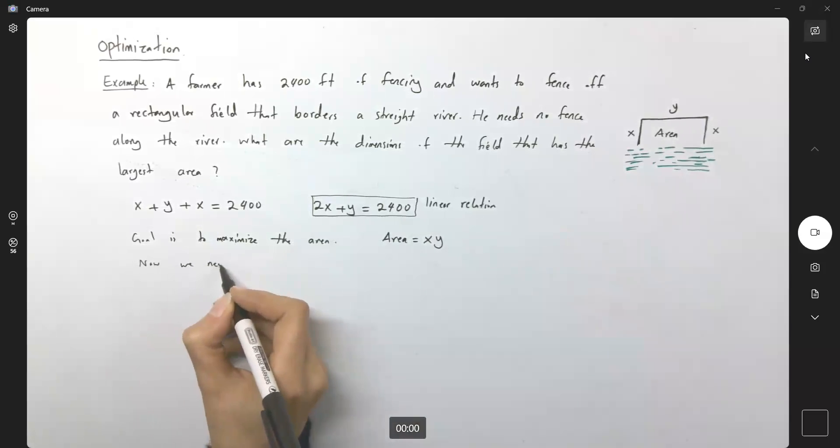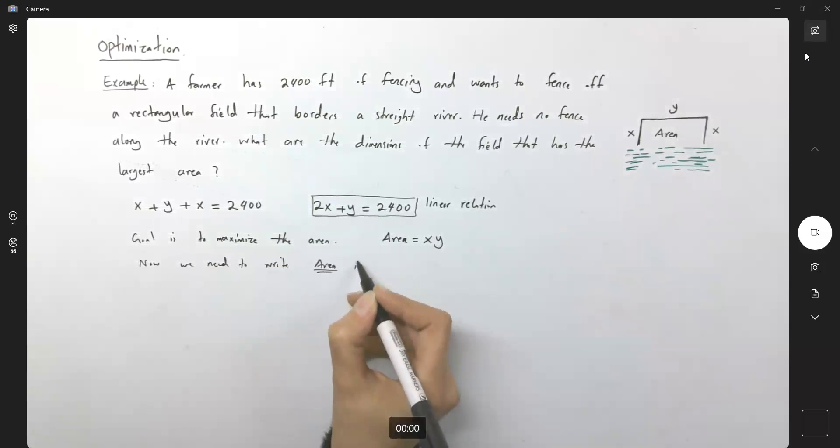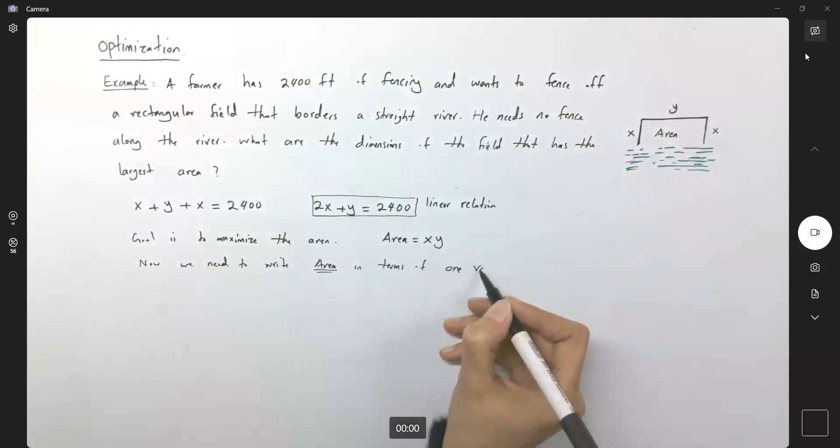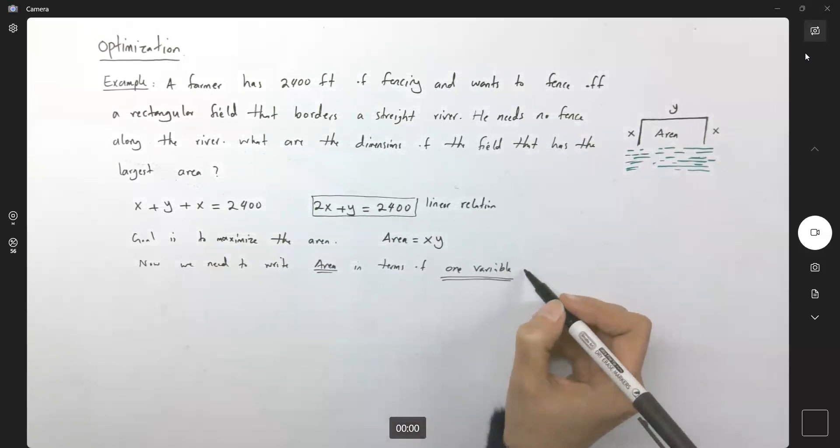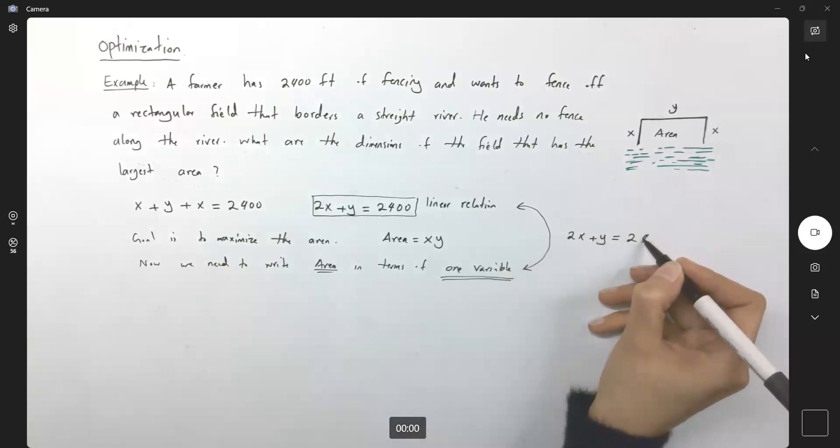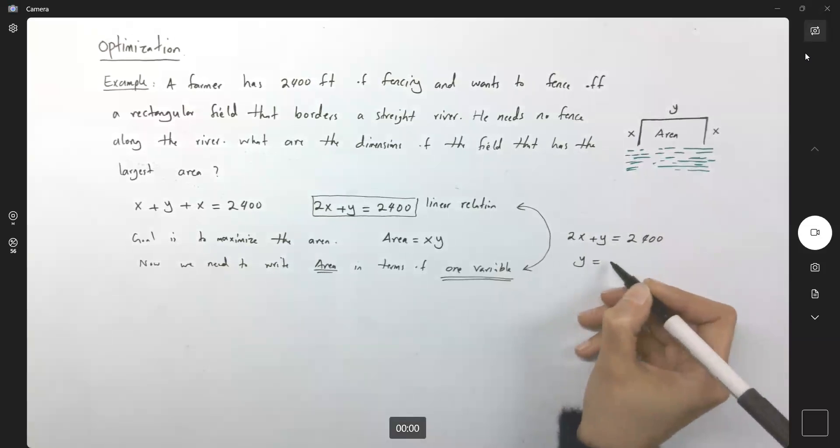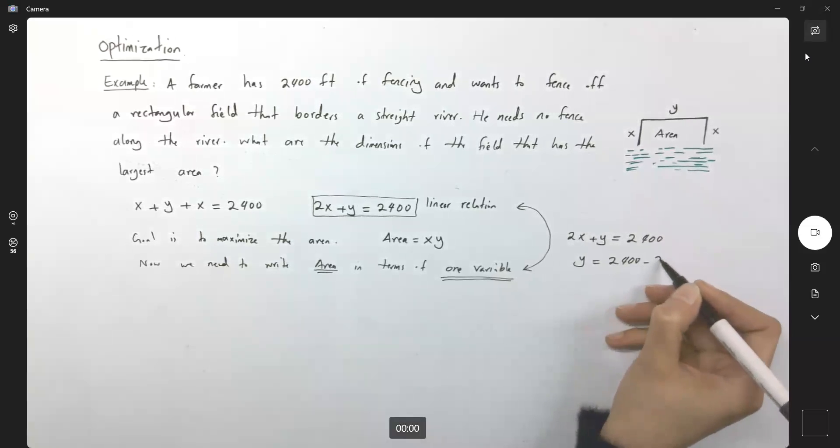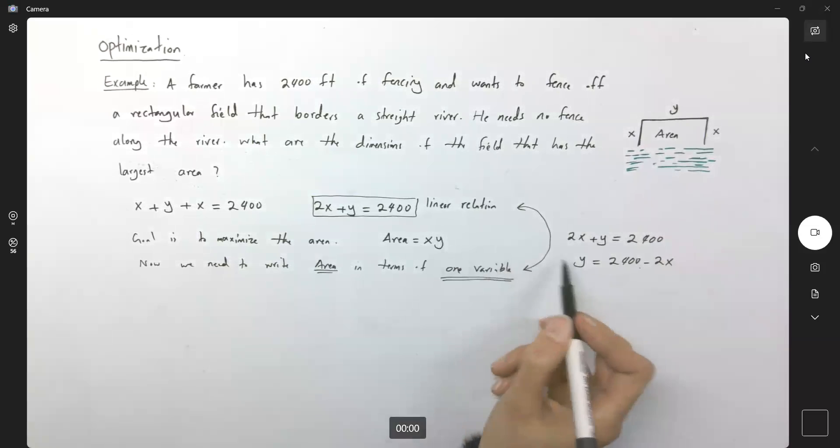Now, we need to write the area in terms of one variable. This is the thing that you need to make sure that you're focusing on. One variable, you have a linear relation between x and y, so let us use it. You know that 2x plus y is 2,400 or y is 2,400 minus 2x. So now substitute that in the area formula.